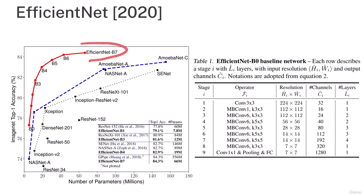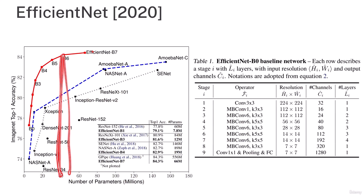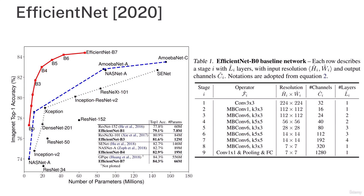In the case of EfficientNet, accuracy increased drastically — almost like exponential growth. From B0 through B7, we can see that B6 to B7 shows less accuracy improvement relative to the jump in parameters: B6 was around 40 million parameters while B7 reached around 70 million. But from B0 to B4, parameters went from under 10 million to about 20 million, while accuracy jumped from roughly 77% to about 83%.